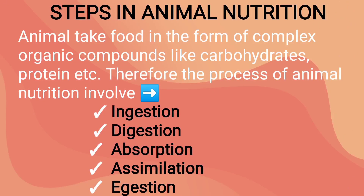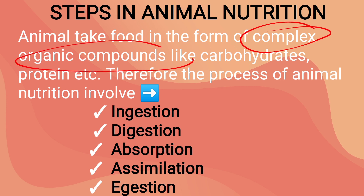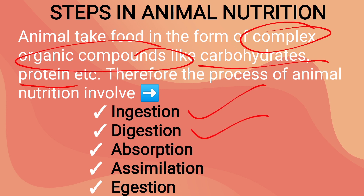Steps in animal nutrition. Animals take food in the form of complex organic compounds like carbohydrates, proteins, fats, etc. Therefore the process of animal nutrition involves the following five steps: ingestion, digestion, absorption, assimilation and egestion.